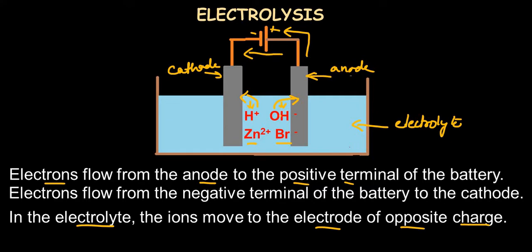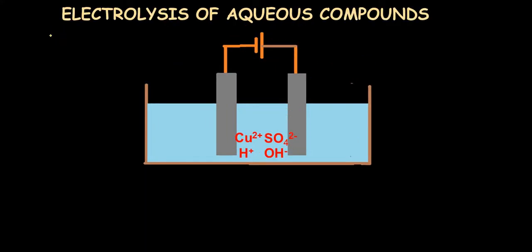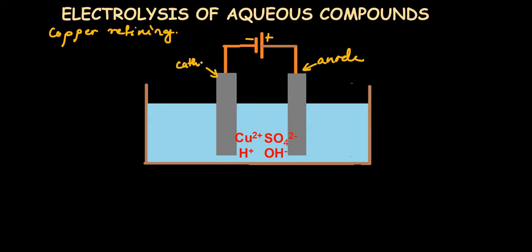So the electrolyte has movement of ions and the external circuit has movement of electrons. The electrolysis process for copper refining is similar to the electrolysis of copper sulfate. For example, in aqueous copper sulfate electrolysis, the negative and positive terminals of the battery connect to the anode and cathode, both made of graphite — that is, carbon — electrodes.